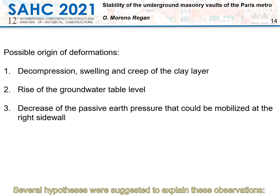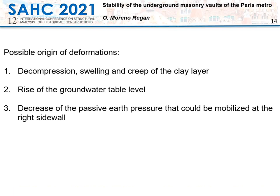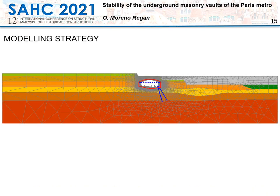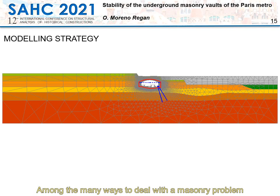Several hypotheses were suggested to explain these observations: one was the decompression, swelling, and creep of the clay layer; another was the rise of the groundwater table; and the last was the decrease of the passive earth pressure that could be mobilized at the right side wall. This last hypothesis is the one I'm going to explore in this paper.